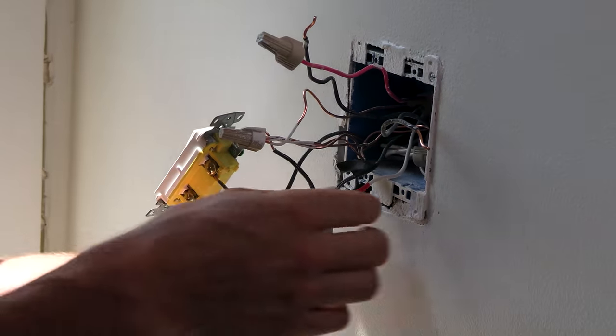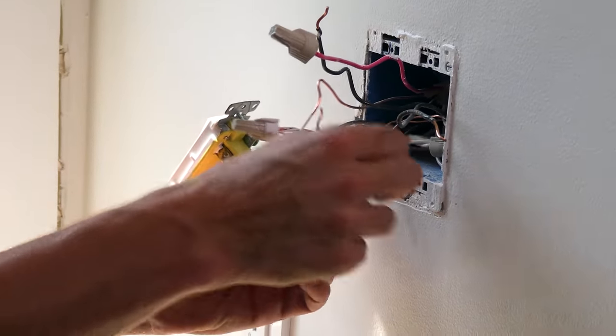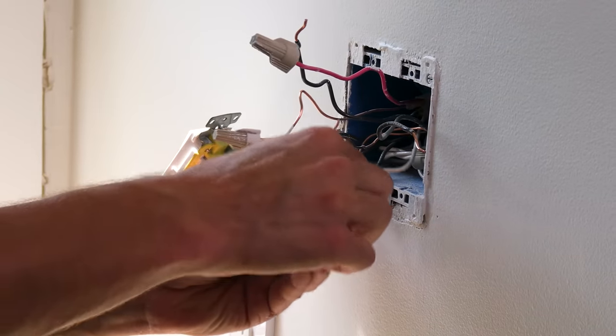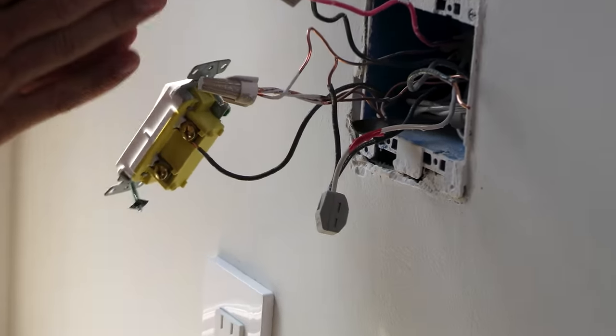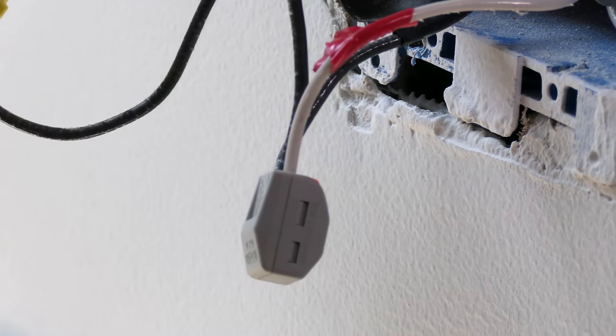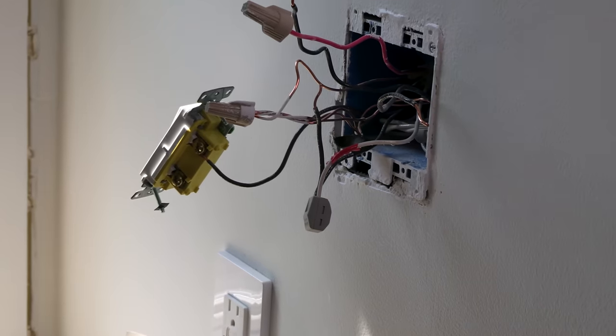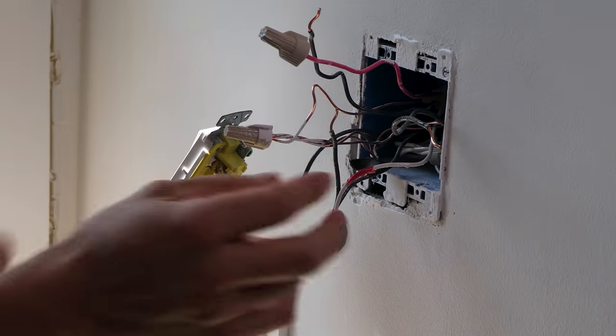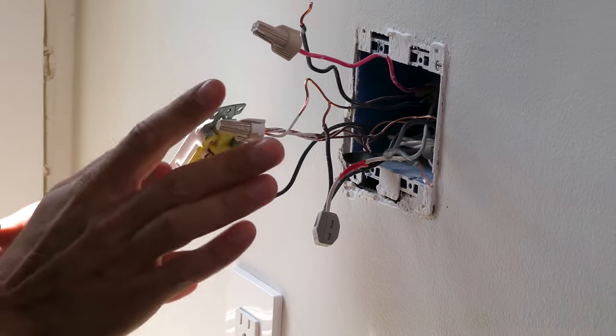And in this case, because I have a dead-end three-way, my white that has been relabeled has now become a hot conductor. So, it's taking places. My hot comes into the box, connects to my white conductor, which jumps to the other end of my three-way, and then my travelers connect there, come back to this box, and then my common is my switch leg. It's going to make more sense here in a minute.